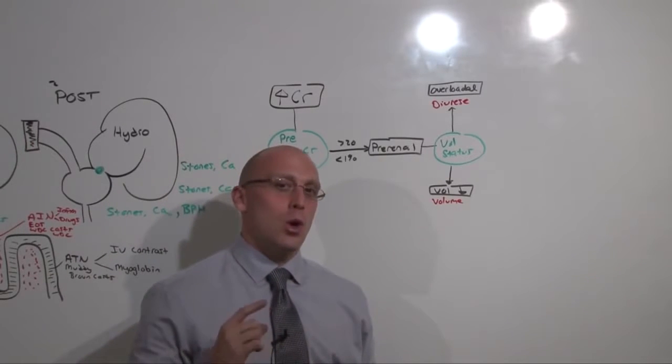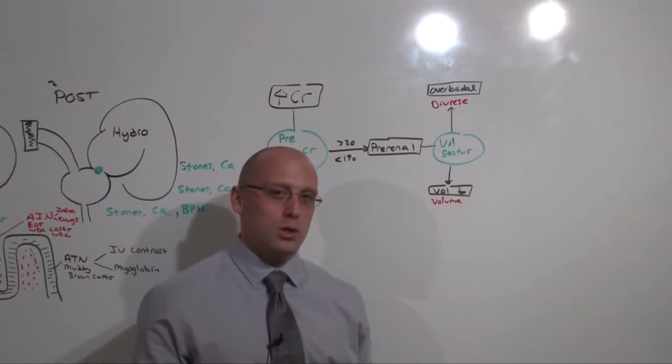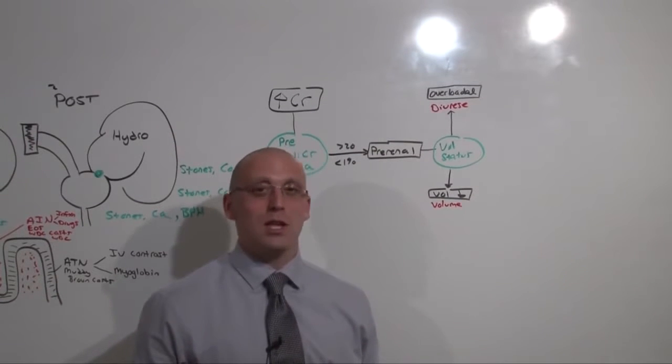Both of them are pre-renal. Both of them appear to be volume overloaded. But one condition responds to diuresis and one responds to albumin or fluid resuscitation. What you can't get out of the BUN to creatinine ratio or the FENA is what to do. And so, let me show you how the FENA works and why you may not want to use it at all.